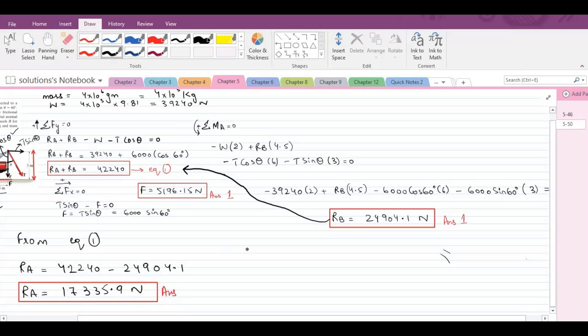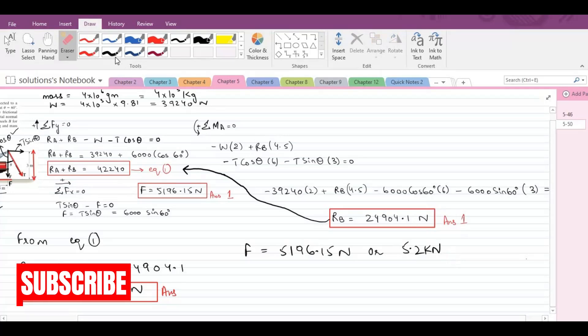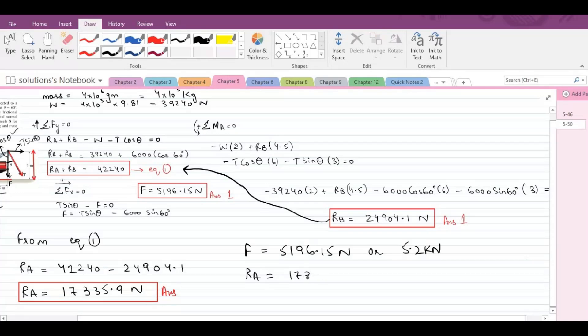So to summarize, the frictional force is 5196.15 newtons or you can also write it as 5.2 kilonewtons. The normal reaction at point A is 17,335.9 newtons or you can also write it as 17.3 kilonewtons. The normal reaction at point B is equals to 24,904.1 newtons, or you can also write it as 24.9 kilonewtons.